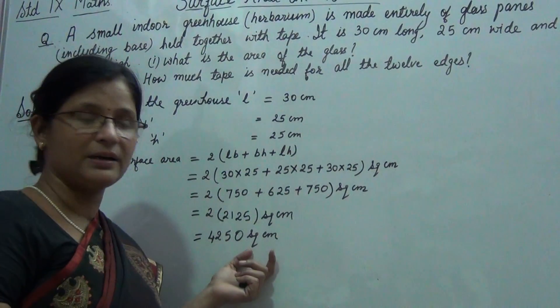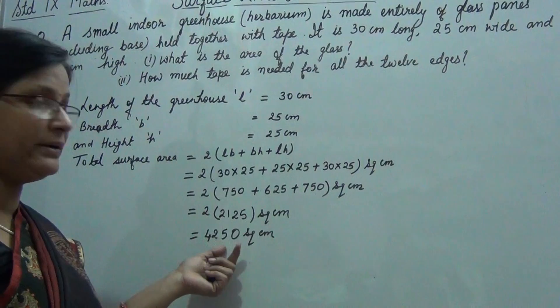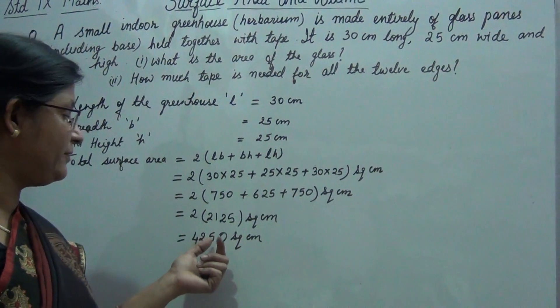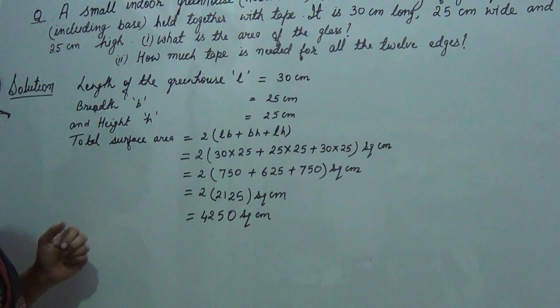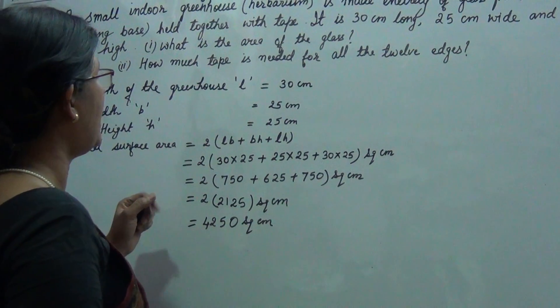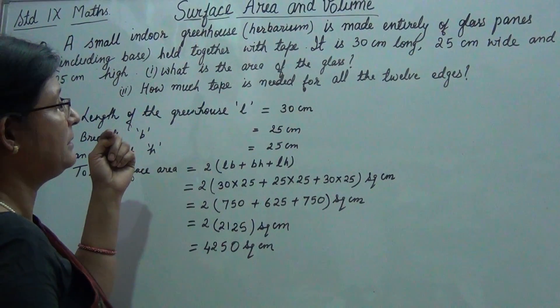So total surface area of the greenhouse is 4250 square centimeter. This is the first part of this question. Now we need to find how much tape is needed, that is we have to find length of the tape.